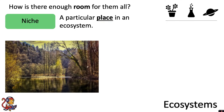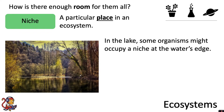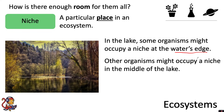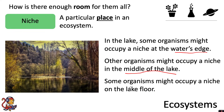If we look at the niches within a lake, some organisms might occupy a niche at the water's edge. Others might occupy a niche in the middle of the lake, or some organisms might occupy a niche on the lake floor. So by separating themselves out and occupying particular niches, we've got lots of organisms co-existing together.